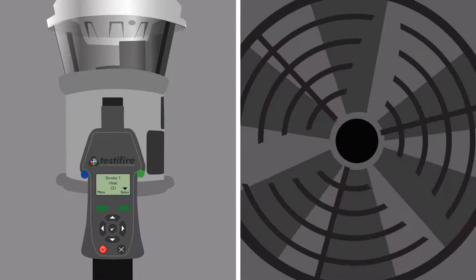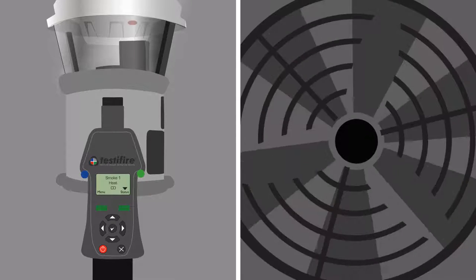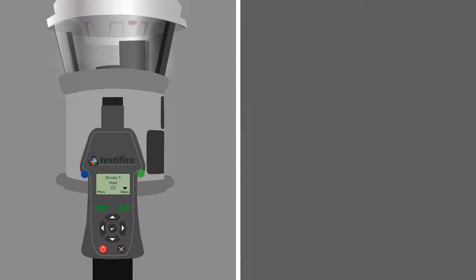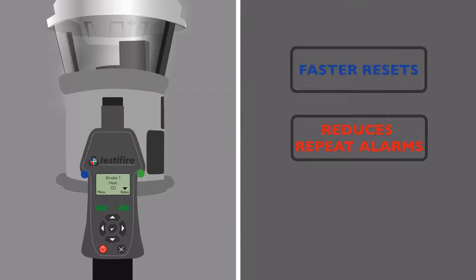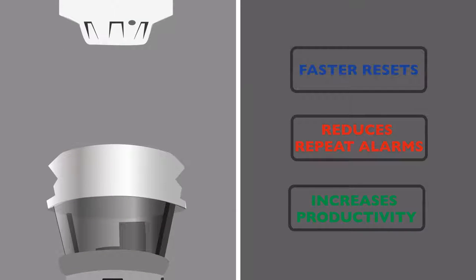And that's not all. Users tell us that the clearing function and the high heat setting are real advantages. The clearing function blows smoke away from the detector, preventing repeat alarms and saving significant time on site.